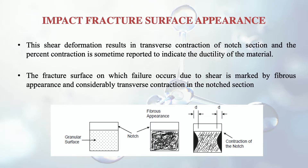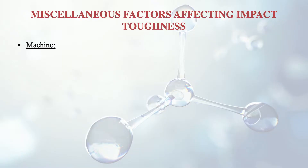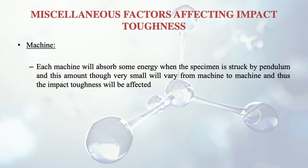There are certain other factors which also affect impact toughness. One factor is the machine itself — each machine will absorb some energy when the specimen is struck by the pendulum, and this amount, though very small, will vary from machine to machine, thus affecting the toughness result. The second factor is the notch root radius, which must be standardized. Any deviation from the standard will influence the result.